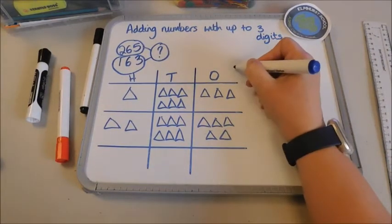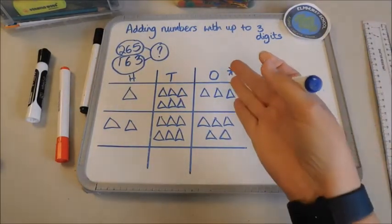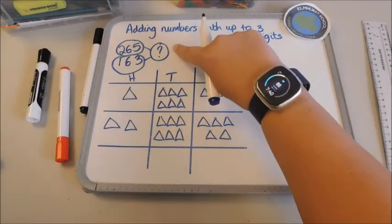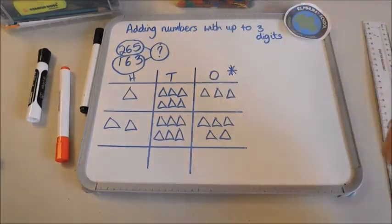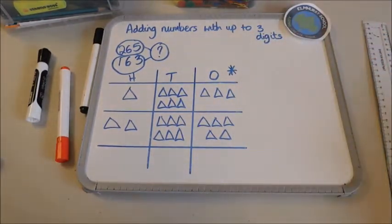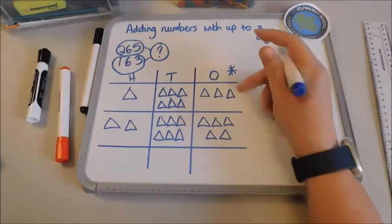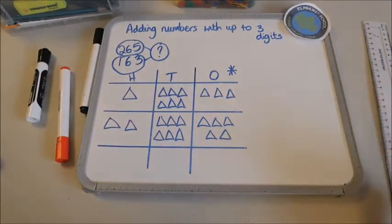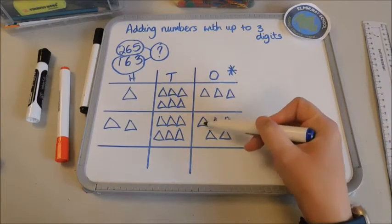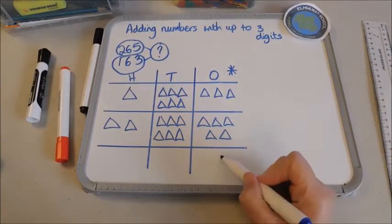I've drawn both my numbers now I can actually start adding. When we add using a place value grid we always start with the smallest column. It's not always the ones column because when we go on to working with different types of numbers like decimal numbers the smallest column would actually be your decimal columns. So it's always the smallest column. I'm going to add up the shapes that I've got, one two three four five six seven eight brilliant. I've got eight in there, that's absolutely fine.